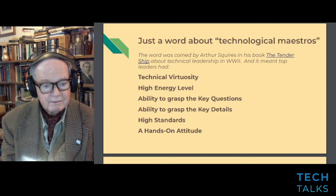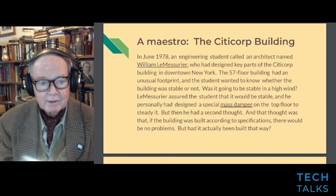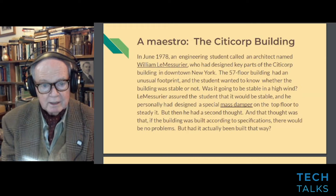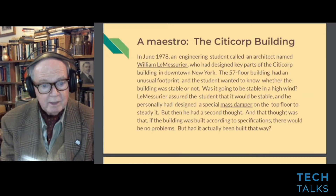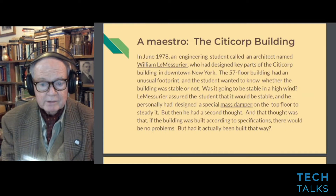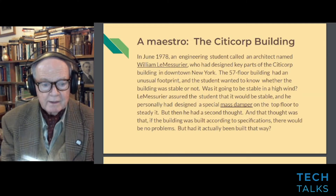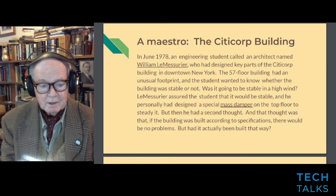Here's an example. In June 1978, an engineering student called architect William LeMessurier, who designed key parts of the Citicorp building in downtown New York. The 57-story building had an unusual footprint, and the student wanted to know whether it would be stable in a high wind. LeMessurier assured the student it would be stable and had personally designed a special mass damper on the top floor. But then he had a second thought: if the building was built according to specifications there would be no problems — but had it actually been built that way?